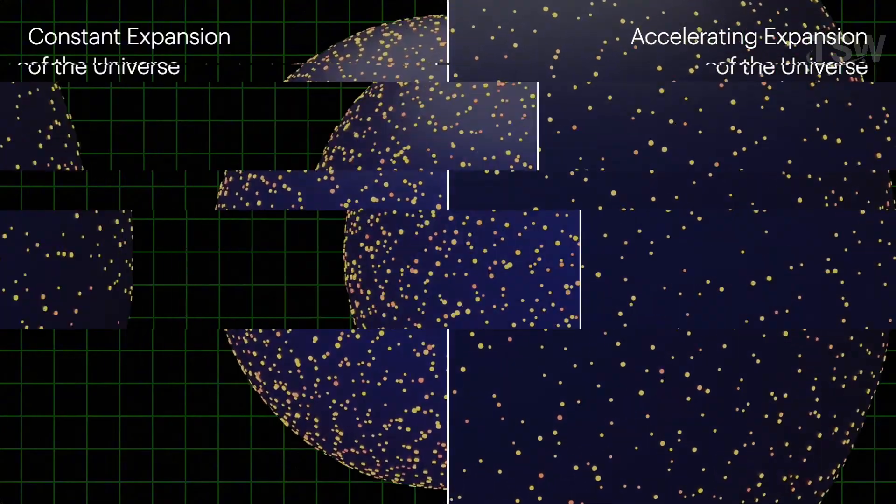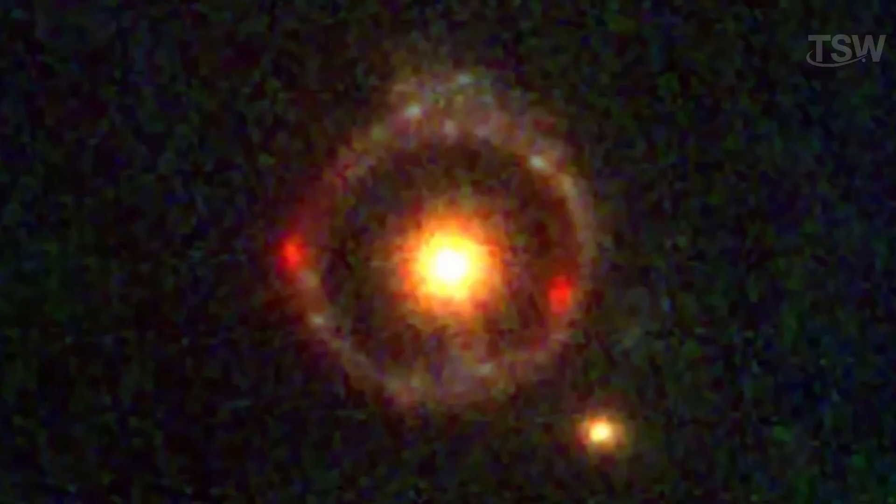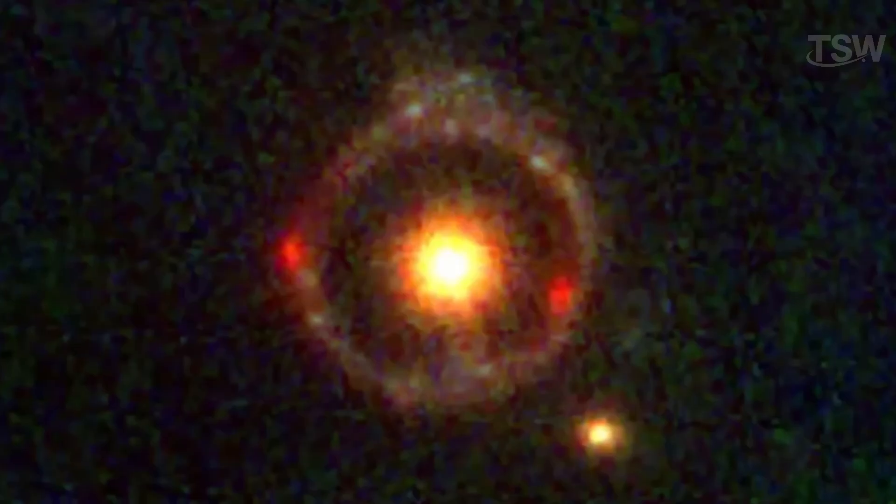Another fascinating example of how gravitational lenses are used is in the search for planets outside our solar system, the so-called exoplanets. In this case, the phenomenon is given a special name, gravitational microlensing.